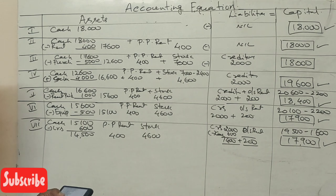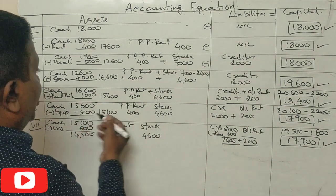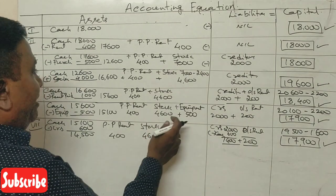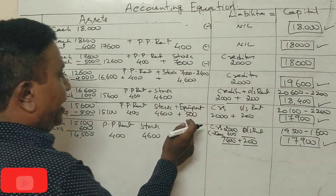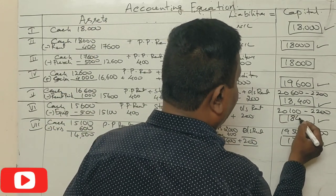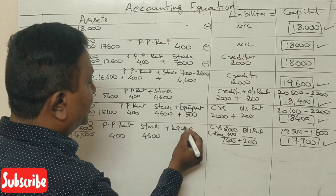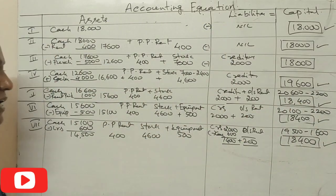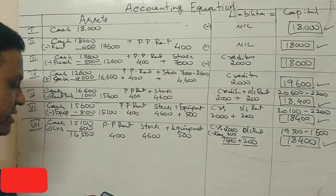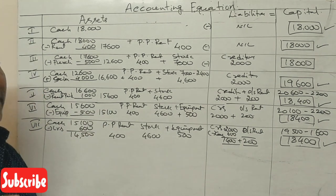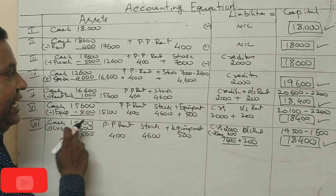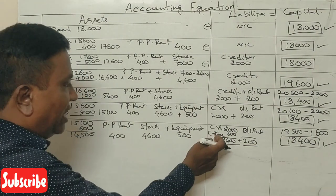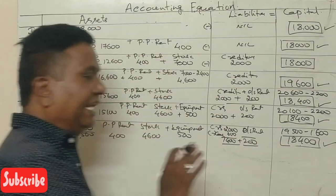Equipment is ₹500. Cash is ₹18,400 — recapping the running totals. Credit hours (creditors) is ₹600, cash is ₹18,400. Checking the accounting equation balance at each step.